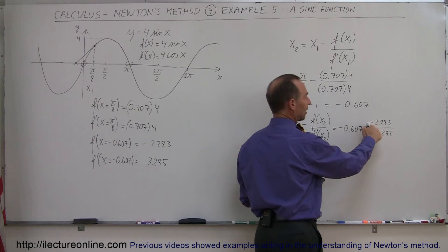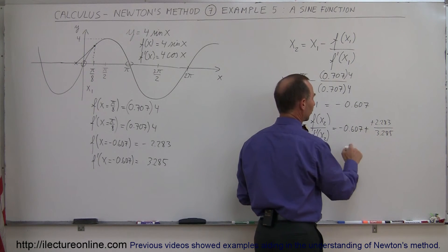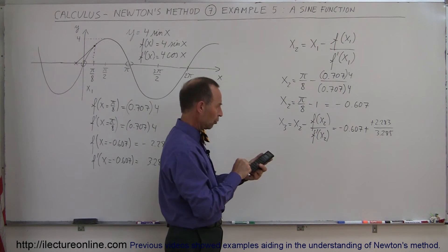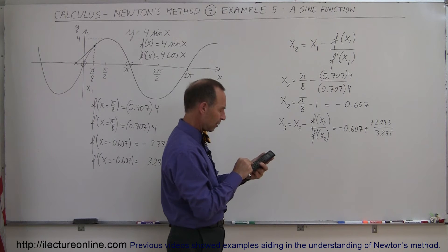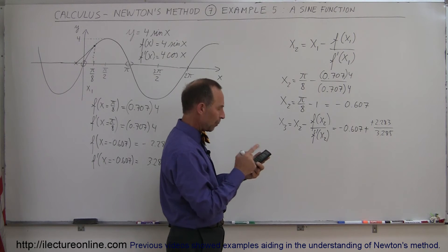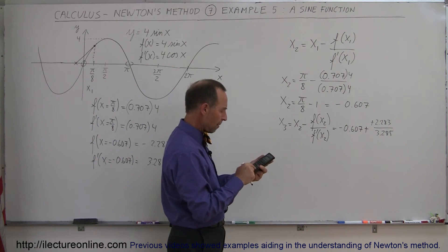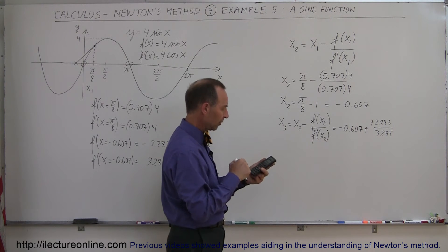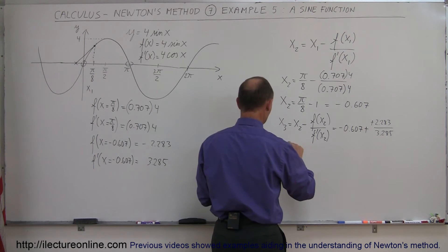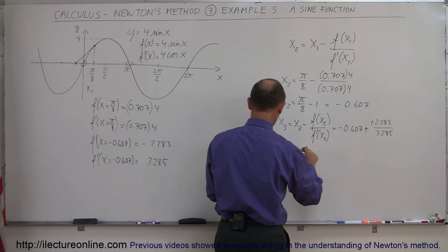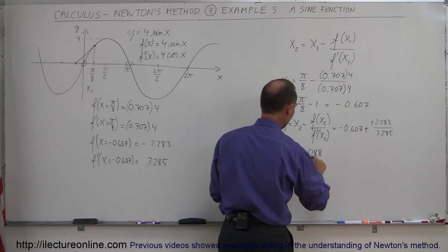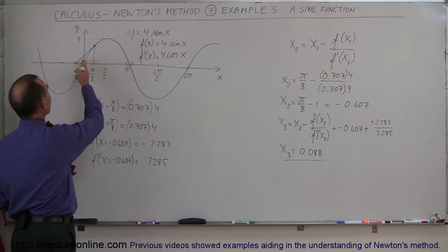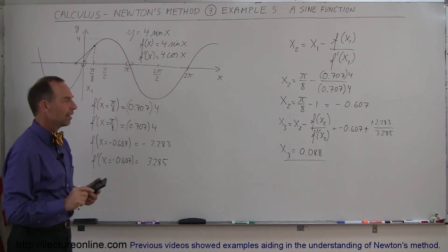So in the numerator we have −2.283 and in the denominator +3.285. Notice that the negatives cancel, making the fraction positive: 2.283 divided by 3.285. We add that to −0.607 and get x₃ ≈ 0.088. So on the third iteration we're getting very close to the root.